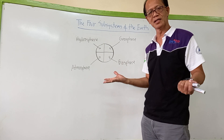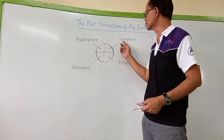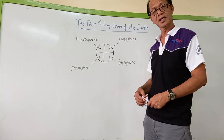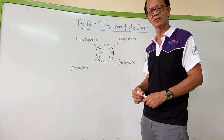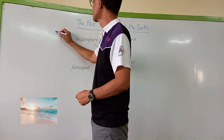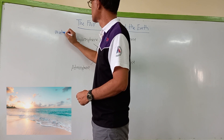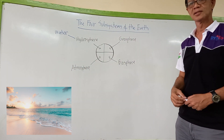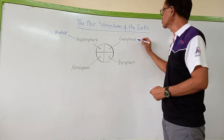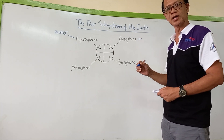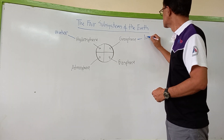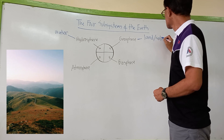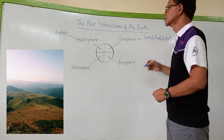Let's look at what we can find in each of these subsystems. When we say hydrosphere, this is the portion of the earth that has water. When we say geosphere, this is the portion of the earth where we can find land or the solid part of the earth.